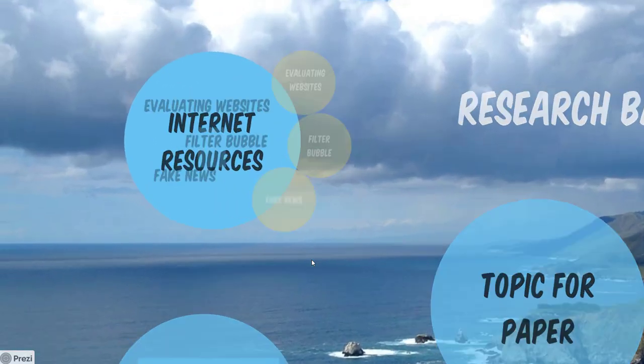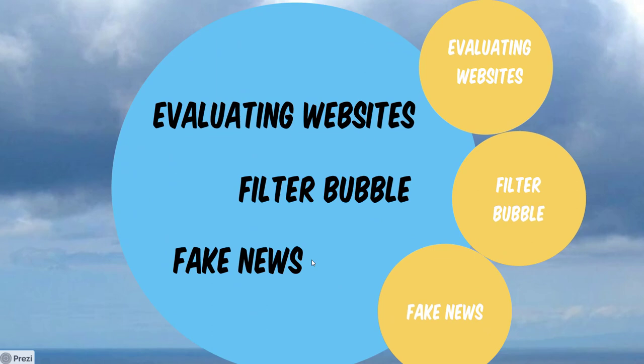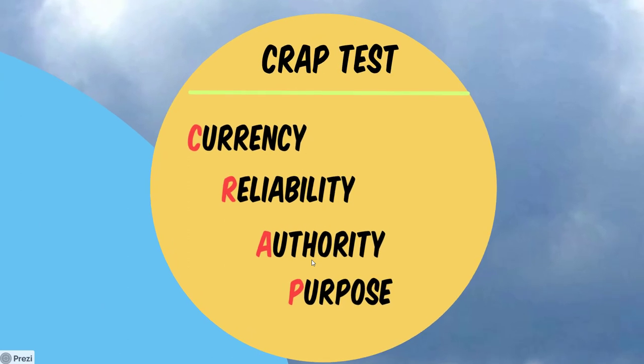For internet resources, you want to evaluate your websites using the CRAAP test: currency, reliability, authority, and purpose. For currency — is the information recent, and is it important to have recent information for your topic? Make sure you know when the information was created; look for a date on the website or a copyright date at the bottom. Next is reliability, because anyone can publish on the internet and many resources are not verified by editors or fact checkers. Ask yourself: can you verify the information from another source, and are there any references given?